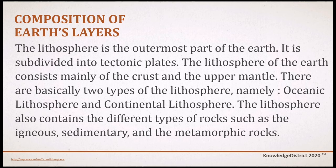Let us talk about the composition of Earth's layers. The lithosphere is the outermost part of the Earth, subdivided into tectonic plates. It consists mainly of the crust and the upper mantle. There are two basic types of lithosphere: oceanic lithosphere and continental lithosphere. The lithosphere also contains different types of rock, such as igneous, sedimentary, and metamorphic rocks.